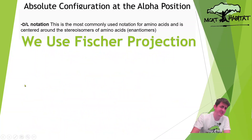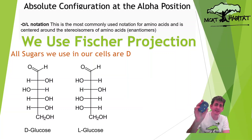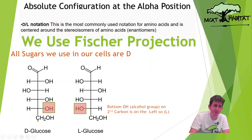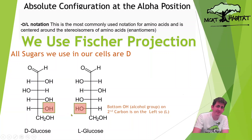We use Fischer projections to determine D/L notation. All sugars in our cells are D. So we have D-glucose and L-glucose. Glucose is six carbons — numbered one through six. Looking at the second carbon from the top: if the OH is on the right, it's D; if the OH is on the left, it's L — left like L. For amino acids, instead of looking at the hydroxyl group, we look at the amino group. If the amino group is on the left, it's L; if it's on the right, it's D.